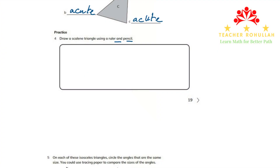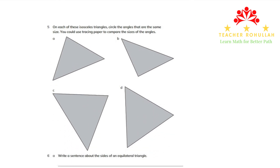Now that we are done with question four, let's go to question number five. It says: on each of these isosceles triangles, circle the angles that are the same size. You could use tracing paper to compare the size of the angles. I'm limited to the application and cannot use tracing paper, but I will use the clues to find the same size angles. We know that in an isosceles triangle, the angles opposite to the equal sides are equal. So this angle and this angle are of equal sizes. And here, this side is equal to this side, so this angle and this angle are of equal sizes.